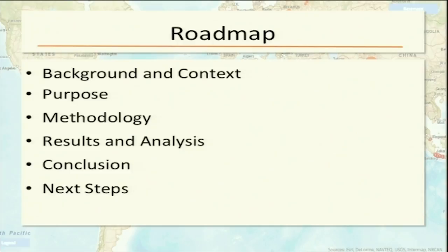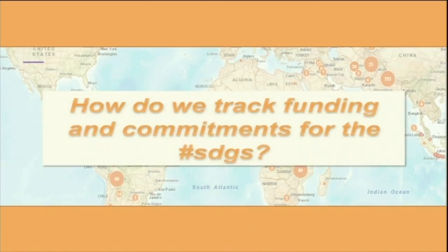Today we're going to go over the background and context, purpose, methods, results, conclusions, and next steps — followed by a discussion and feedback from additional panelists. The first question we came together around is: how do we track funding and commitments for the SDGs according to vulnerable populations? How do we develop a research methodology that is robust, valid, and easy for policymakers and development agencies to use to direct more funding toward inclusive practice?